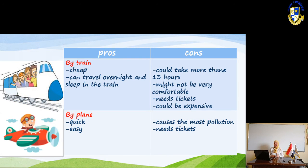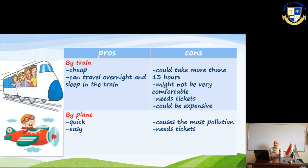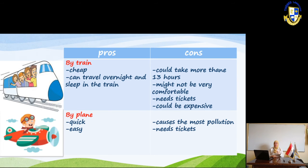Now the pros and cons of going by train. Going by train is cheap, and you can travel overnight and sleep on the train — that's a nice advantage. But the cons are: it could take more than 13 hours, which is very tiring. The bed might not be very comfortable and it's quite tight. It also needs tickets and could be expensive.